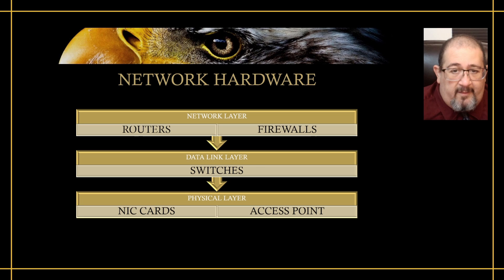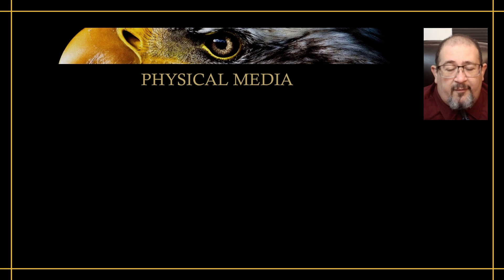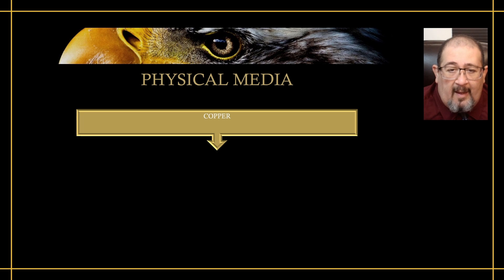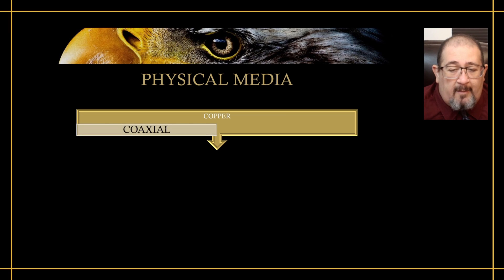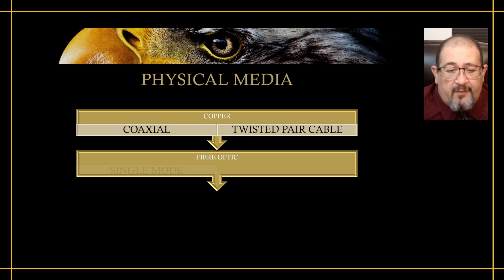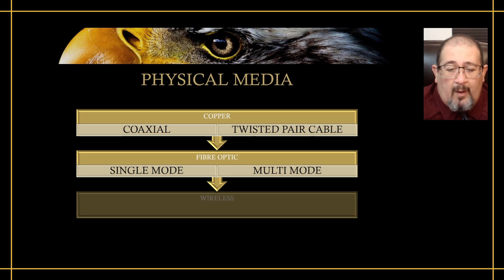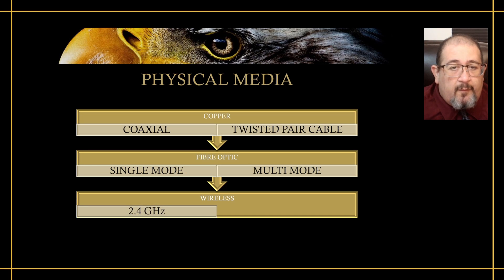Now end devices and network devices need some way of connecting to each other, and that's where our physical media comes in. We have copper as a physical media — typically coaxial cables or twisted pair cables. When we come to fiber optic, we're typically going to see either single mode or multimode. When it comes to wireless networks, this is where I see the 2.4 gigahertz radio wave band and/or the 5 gigahertz radio band.